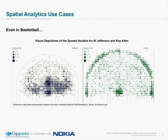Also in basketball — a representation of any spatial area can be used for spatial analytics. Here we're looking at a comparison of Al Jefferson, who plays for Utah Jazz, and Ray Allen, who plays for the Boston Celtics. This is basically a compilation of data points for field goal attempts. The plot of points within this spatial area gives us a very good indication of a certain metric.